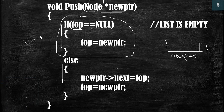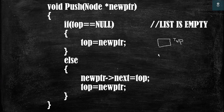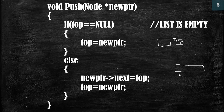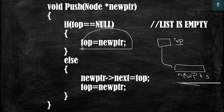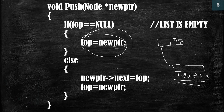Let us see the first case where the list is empty. Assume that top pointer is having a null value because the list is empty. To insert an element, newptr is pointing to the new node. We do one simple step: we assign the address of this node to top, that is top = newptr. So top will now point to this new node, and in this way we can insert an element in an empty link stack.